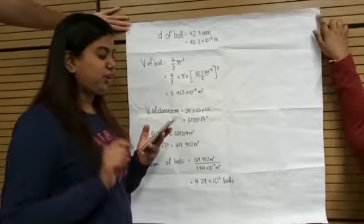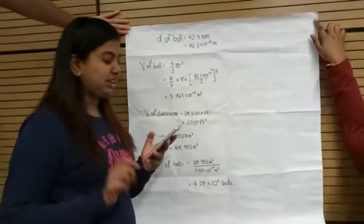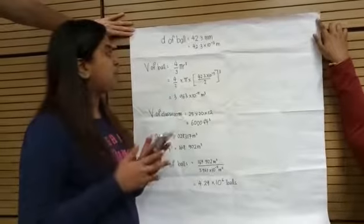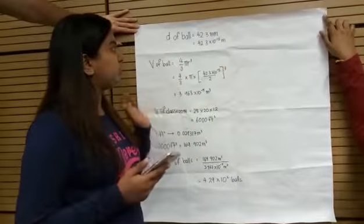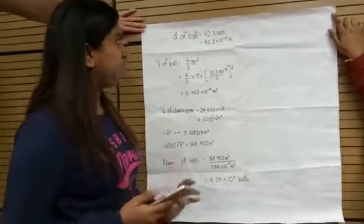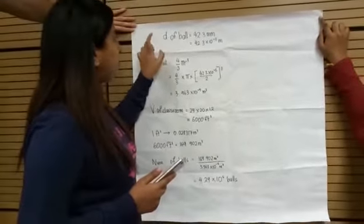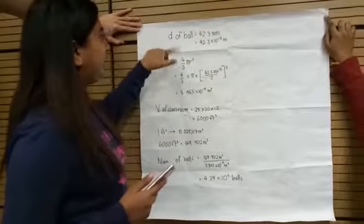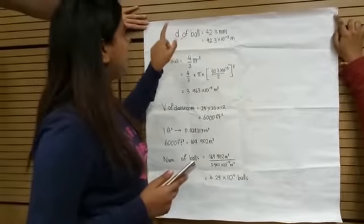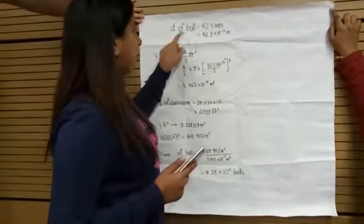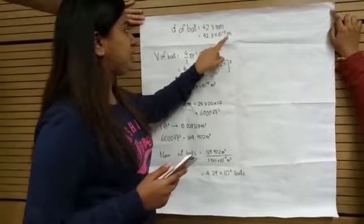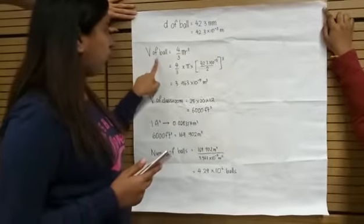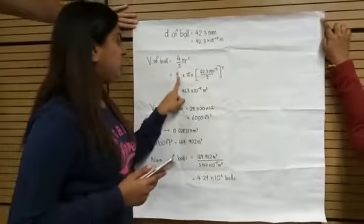We have to find the number of balls in the classroom. The size of the classroom and the diameter of the ball are given. We have to convert the diameter of the ball from millimetres to metres, and then find the volume of the ball using the formula.